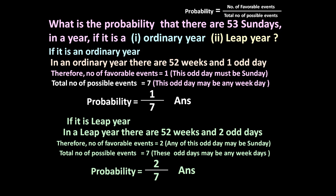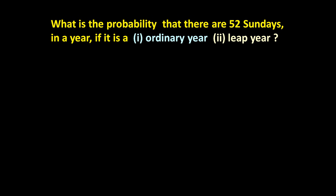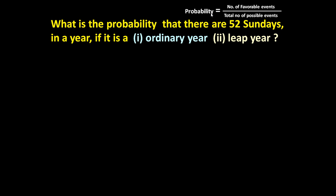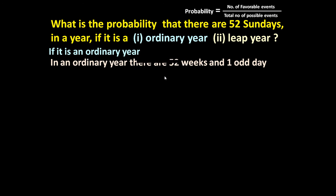Let us solve one more similar type of problem: what is the probability that there are 52 Sundays in a year — part one, if it is an ordinary year, and part two, if it is a leap year? We want only 52 Sundays. The formula for probability is number of favorable events divided by total number of possible events.